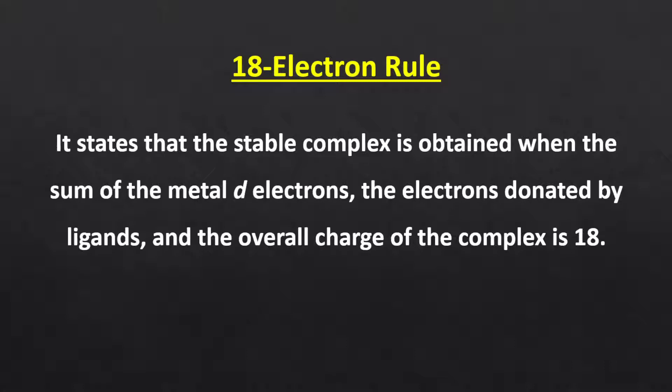In 3d transition metals, the number of electrons in 4p is 0, so the valence electron count depends on 4s and 3d electrons. However, before complex formation, all the 4s electrons are transferred to the 3d orbital in the excited state, and then the metal undergoes hybridization. So we can say the valence electron count depends only on the d electrons.